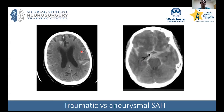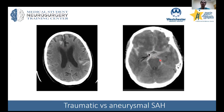Traumatic subarachnoid hemorrhage — this blood usually washes out over time and is not a significant finding. Aneurysmal subarachnoid hemorrhage, though, is much more significant. When I'd call my chief in the middle of the night to say we have a subarachnoid hemorrhage, he immediately wanted to know: is it the type where nothing needs to be done, or the type that requires intervention? In the aneurysmal case, you need a CTA to look for an abnormal blood vessel that could explain this diffuse pattern of bleeding in the subarachnoid space — something to keep in mind as interns.